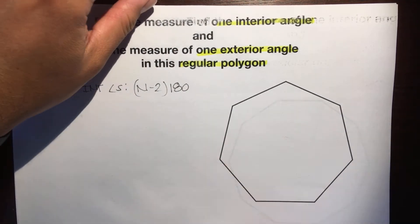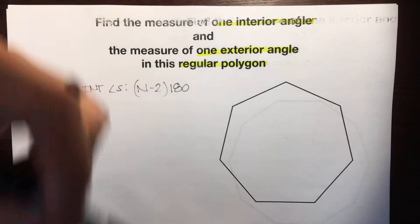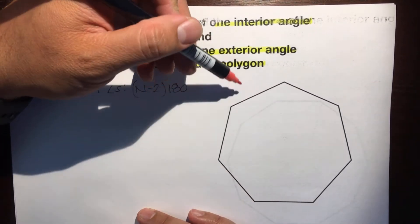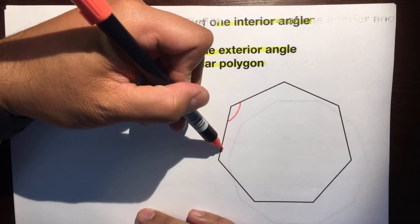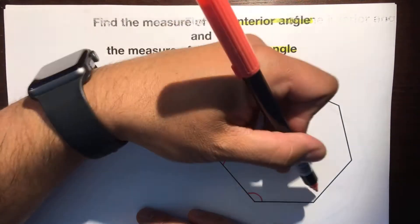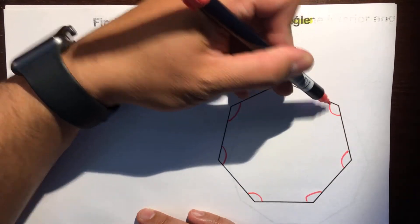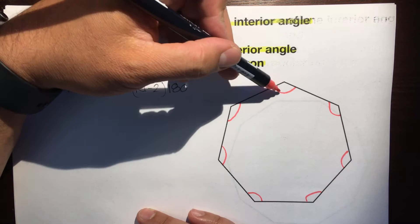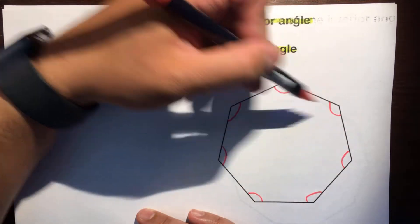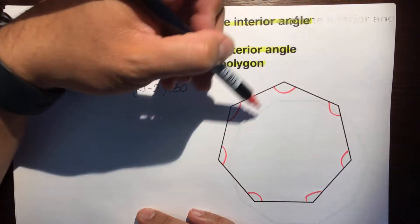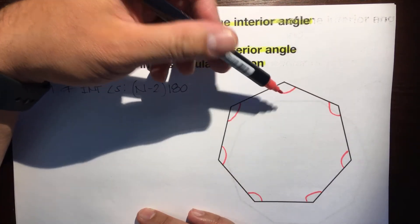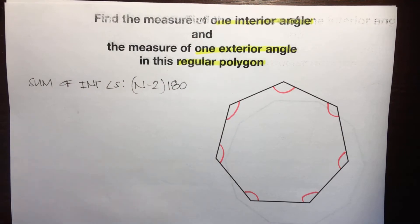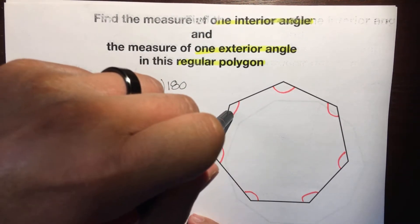Here's the key word: regular. If you remember, regular means it's equilateral and equiangular, so that means this angle is congruent to this angle, which is congruent to this angle, and so on for all 7 angles. All 7 of these angles have the exact same measure. We could call all of these x.